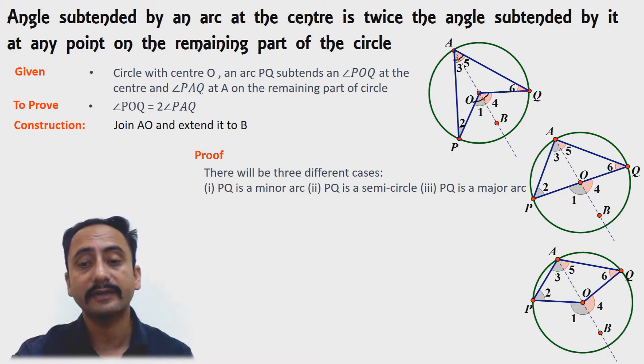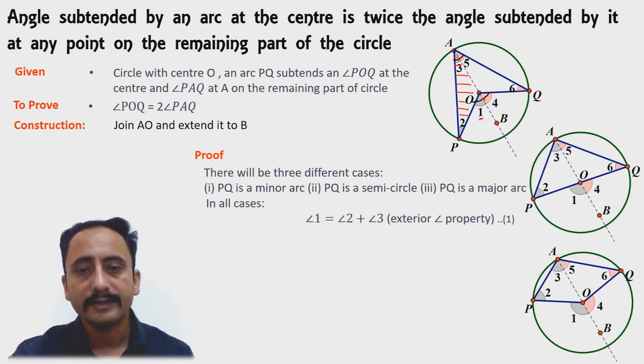In all these cases, angle 1 equals angle 2 plus 3 because of the exterior angle theorem. If you look at triangle AOP, angle 1 is the exterior angle, and 2 and 3 are interior opposite angles. Therefore, angle 1 equals angle 2 plus 3.